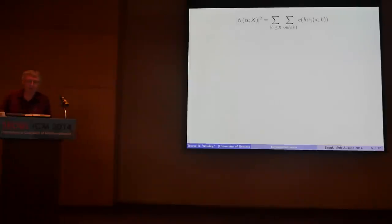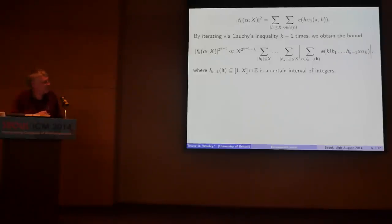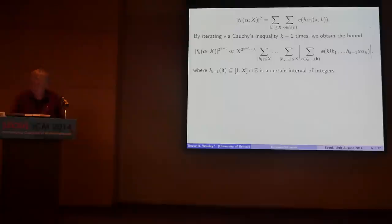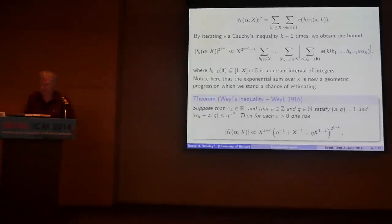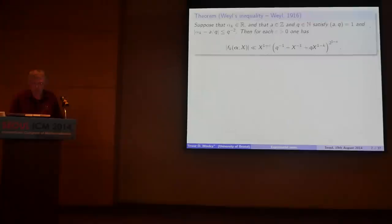If you iterate this kind of approach using Cauchy's inequality — which was really underlying Ben Green's talk this morning — you get an estimate inflated by some power of x. After k minus 1 operations, you're looking at the 2 to the k minus 1 power of the exponential sum bounded in terms of something linear in x. Working through all the details, the estimate you can extract from this kind of argument is summarized at the bottom of the screen.